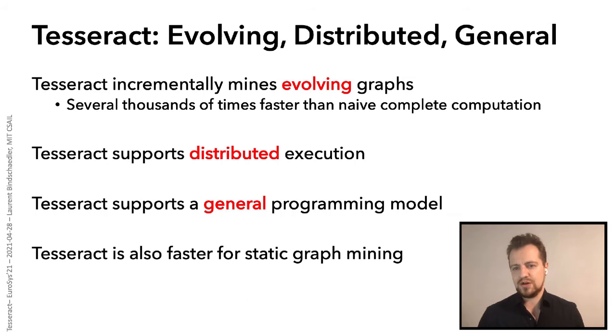So this is the problem that our system, Tesseract, is designed to solve. Tesseract incrementally mines evolving graphs, which is generally thousands of times faster than naive complete computation of the new match set after the updates. Intuitively, this is somewhat expected, because updates to the graph have generally a local effect. Like for example, an update should only affect the vertices in its neighborhood.